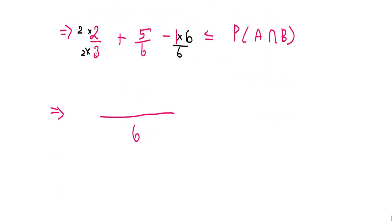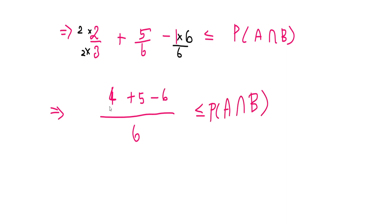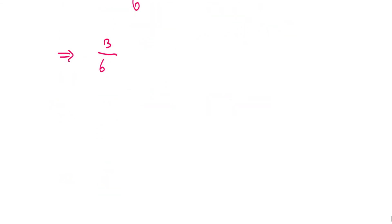After simplifying, we get 1/2 ≤ P(A∩B). Call this equation number 2.